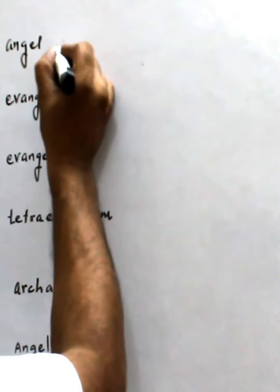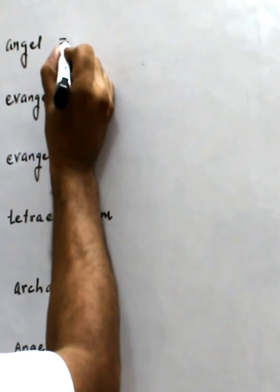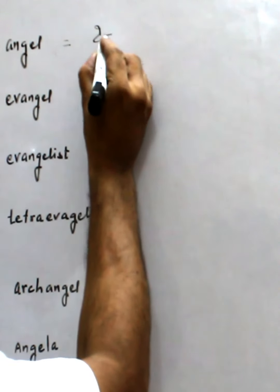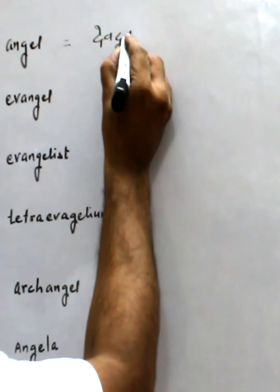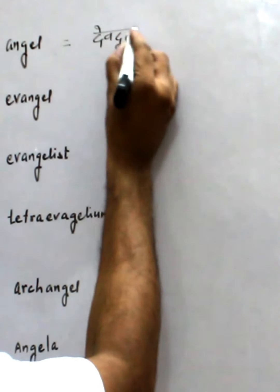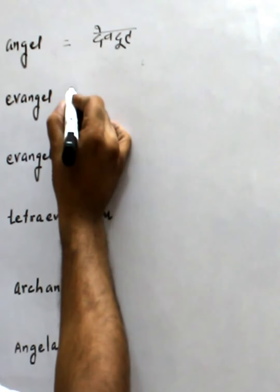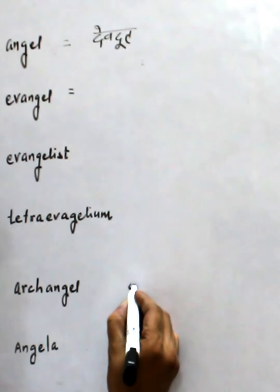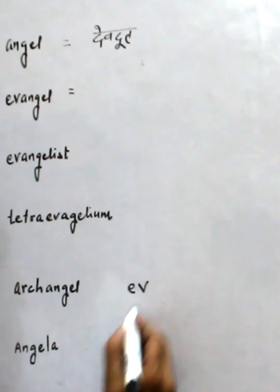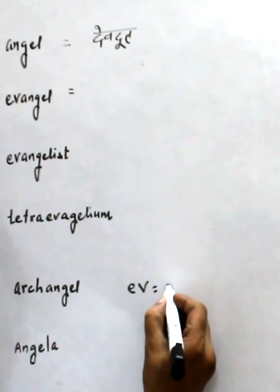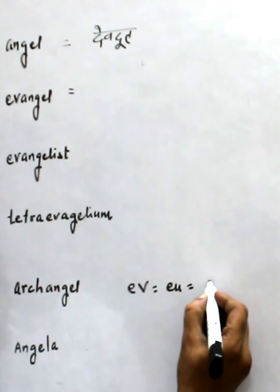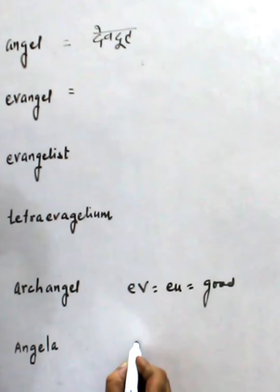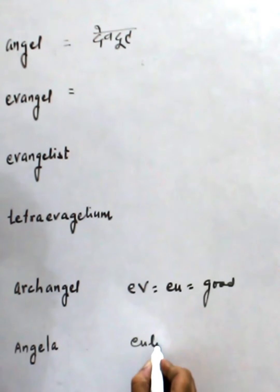So there is angel, evangel. Now, there is a word called EV — EV added. This means good. Sometimes you say Eulogy — Eulogy means good study.